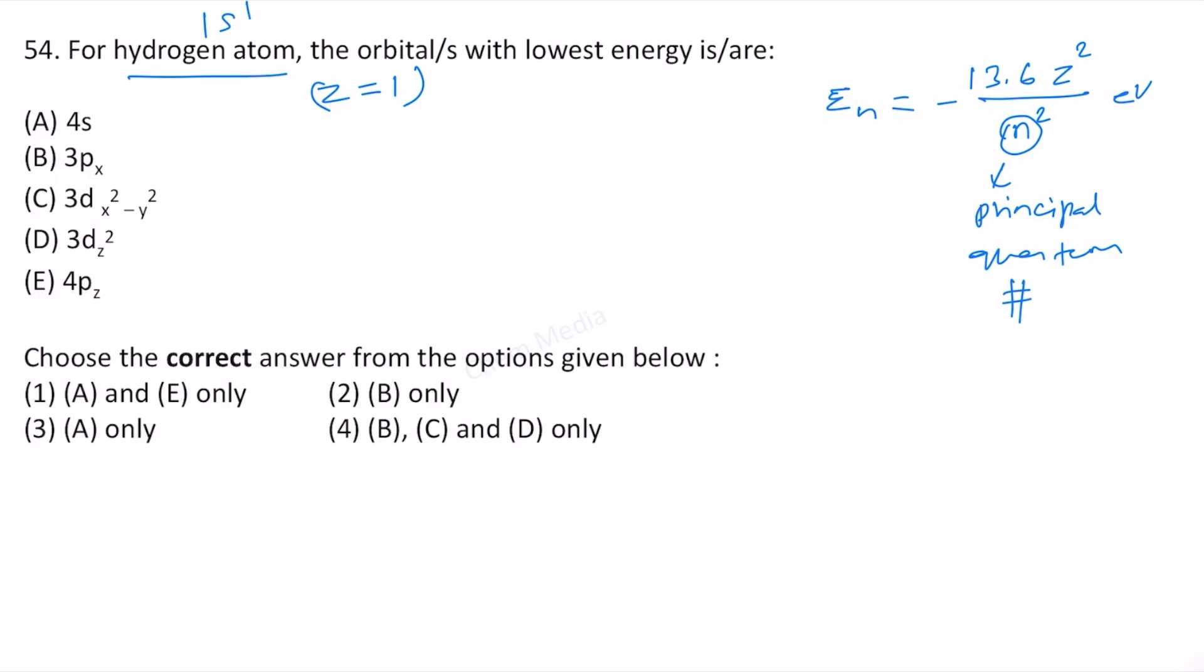Therefore the energies can be written this way: 1s is less than 2s that is equal to 2p, less than 3s equal to 3p equal to 3d, less than 4s equal to 4p equal to 4d equal to 4f. That's how the energy values are written for the atomic orbitals of hydrogen atom.